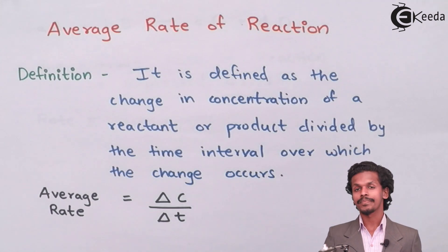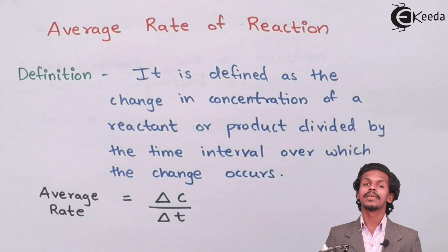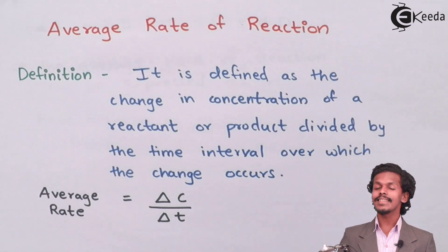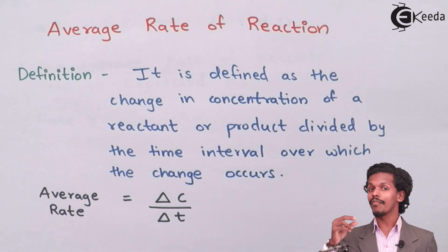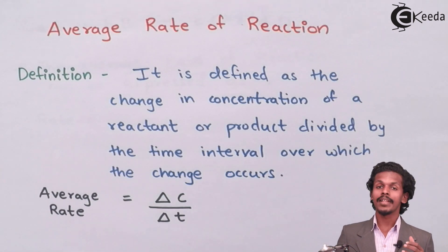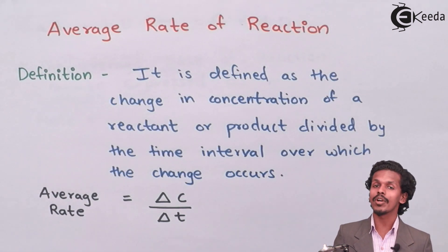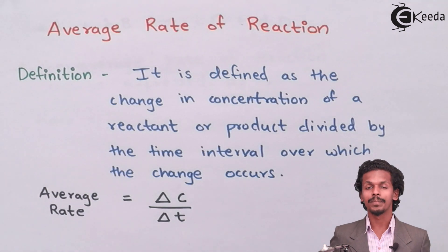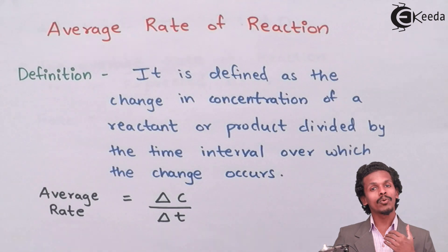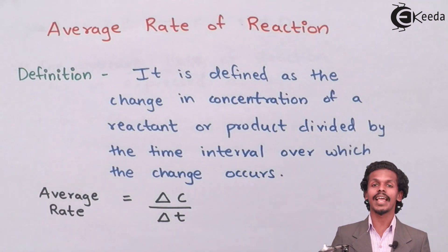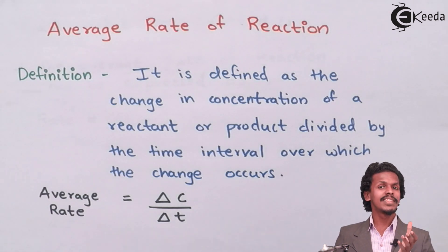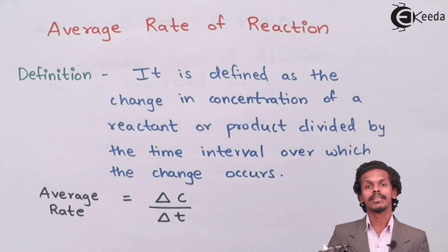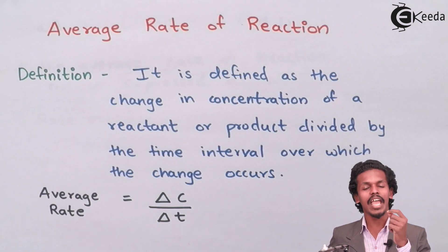For example, if reactant A converts into product B, the concentration of A will go on decreasing and the concentration of B will go on increasing. When the reaction has not even started, the reactant concentration is at its highest value. After a particular interval of time, the reactant concentration decreases to some extent.